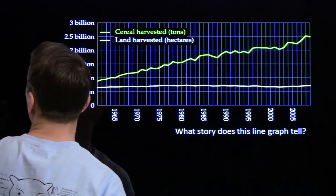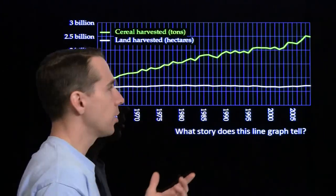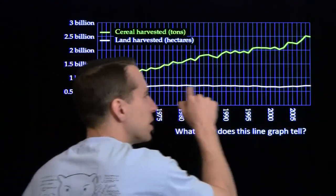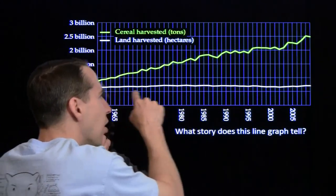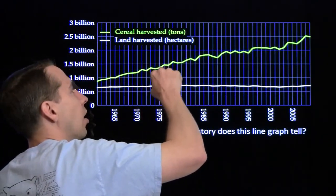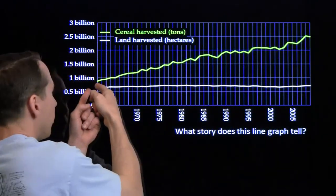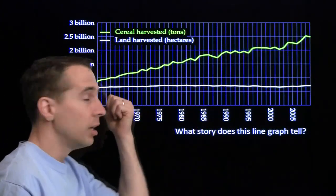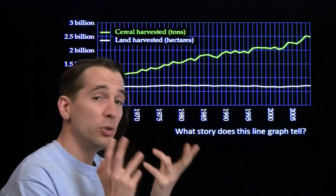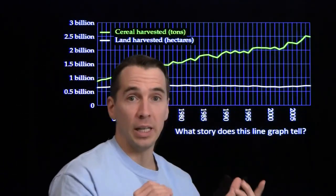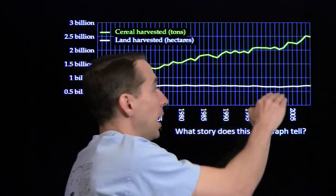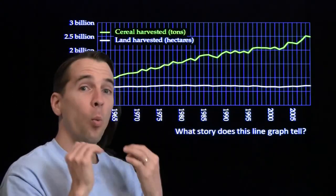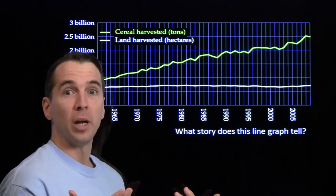So we come back to our story. What is this line graph telling us? The land harvested stays pretty much the same this entire time, while the amount of cereals harvested goes up and up — more than two and a half times higher at the end than at the beginning. We're producing more food with the same amount of land; we can feed more people with the same amount of land. What this tells me is that incredibly smart people are using math and science to make the world a better place.